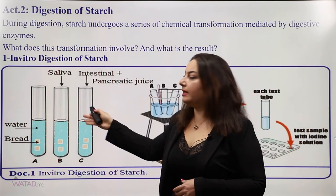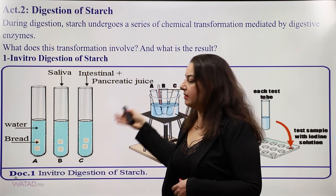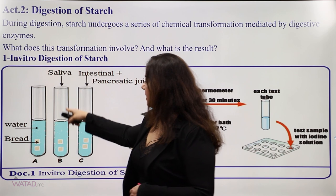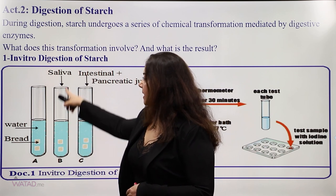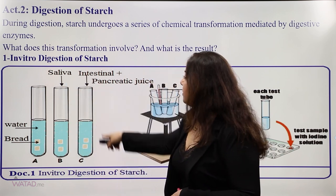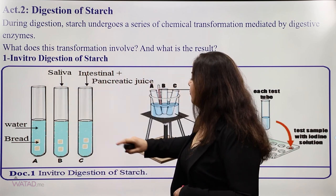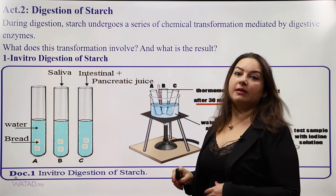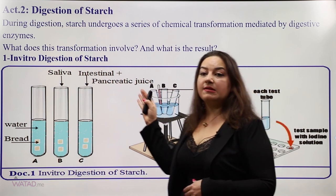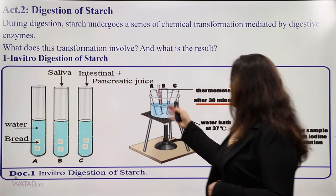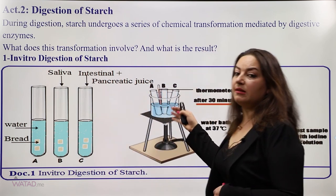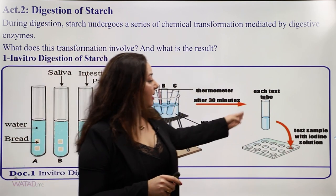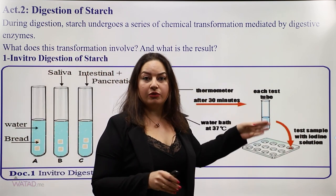We will start with the in vitro digestion of starch. In this experiment we have three test tubes: A, B, and C. In the first test tube we have water and bread. In the second test tube we add water, bread, and saliva. In the third test tube we have water, bread, intestinal juices, and pancreatic juices. The three test tubes are placed in a water bath at 37 degrees Celsius for 30 minutes.